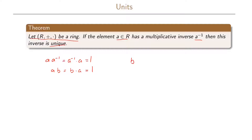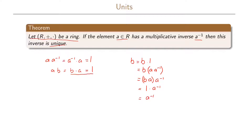Based on this, we can write b equals b times a times a to the minus 1, because a times a to the minus 1 equals 1. By using the associative law we can write this as b times a, times a to the minus 1. And b times a we have already said is 1, so this becomes 1 times a to the minus 1, which equals a to the minus 1 since 1 is the multiplicative identity.